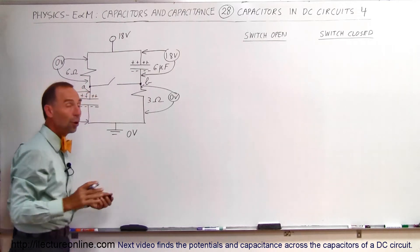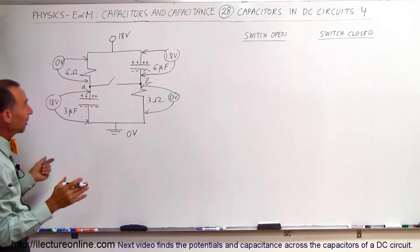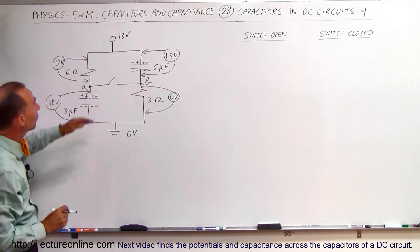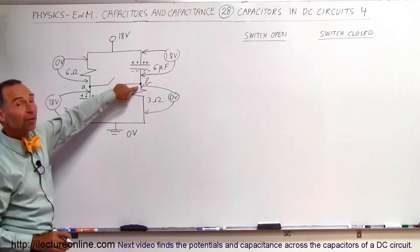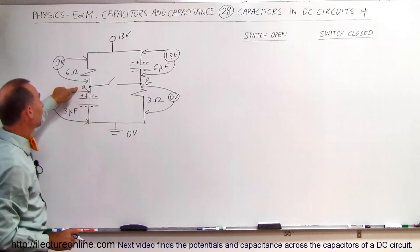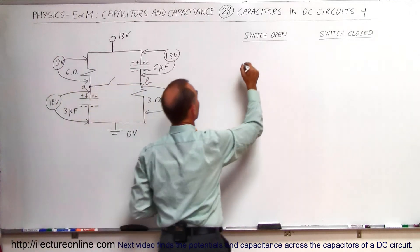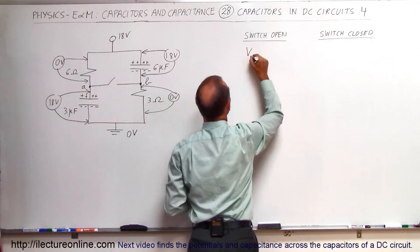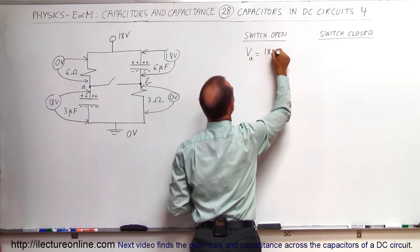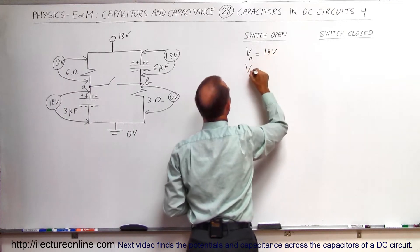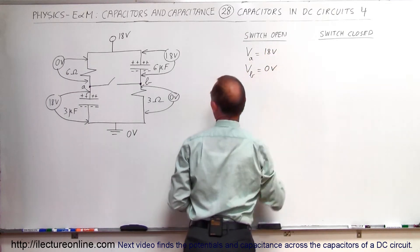Now that we know the voltage drop across each capacitor, we know that V_B will be at 0 volts and V_A will be at 18 volts. So we can write: V_A = 18 volts and V_B = 0 volts.